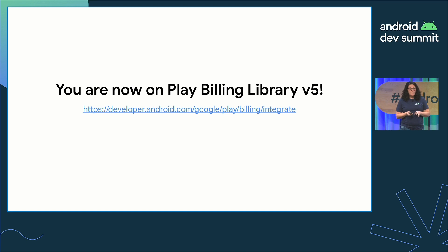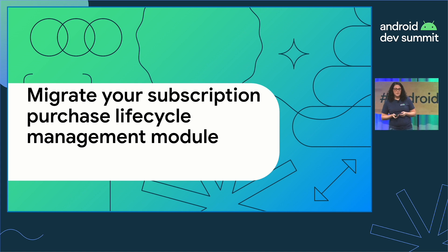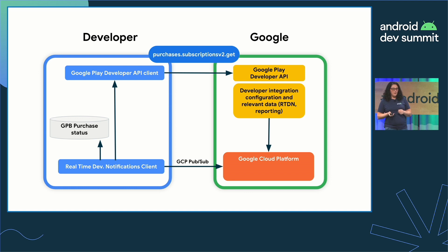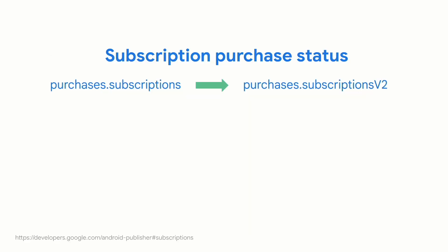Once your app is migrated, your backend needs to start handling purchases made with these new methods. The subscription status management component in your backend uses the Subscription Purchases API. With real-time developer notifications, developers get a message every time a purchase state changes, and with that information they call the Google Play Developer API to pull the purchase status and adjust the entitlement accordingly. This remains the same, but the endpoint you'll use to pull subscription status is different — it's called purchases.subscriptionsv2, and it has one method: get.